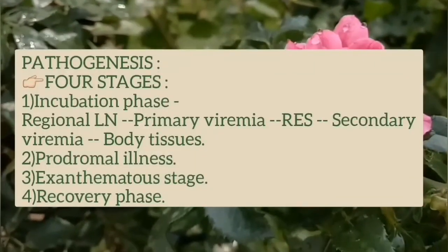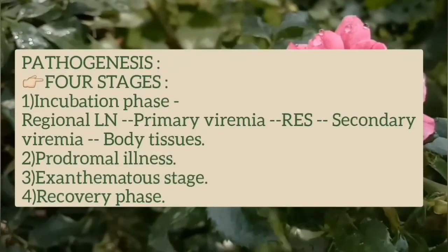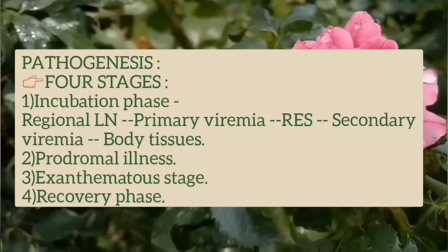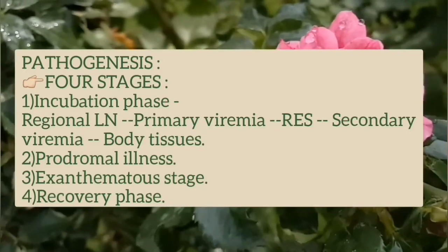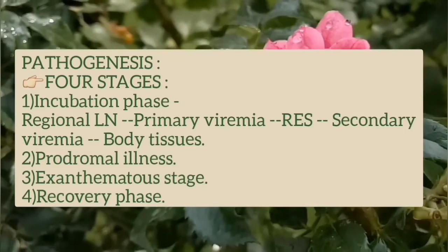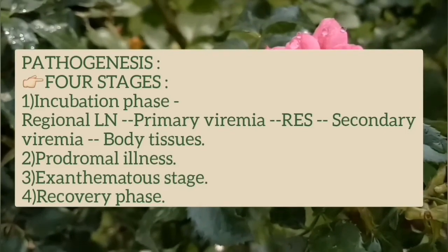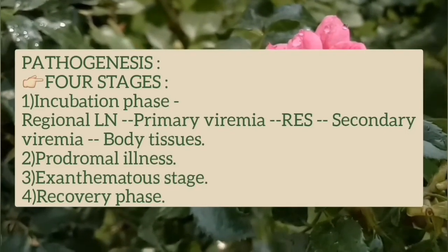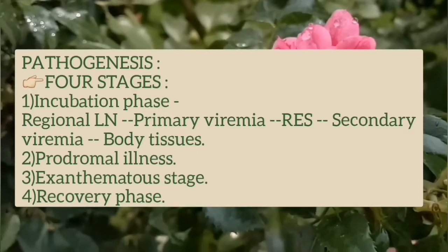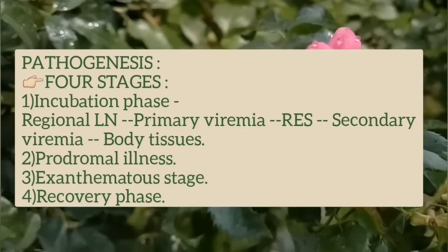Now the pathogenesis has 4 stages. First is the incubation phase, in which the virus replicates in the regional lymph node. From there, there is primary viremia and it reaches the reticuloendothelial system. It again multiplies here and then there is secondary viremia and all the body tissues are affected.